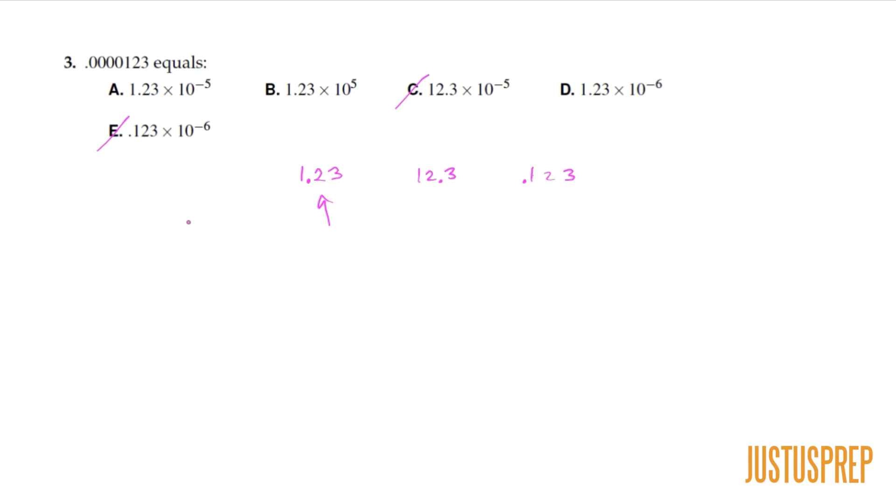When we're writing a number greater than 1 in scientific notation, we're going to raise that to a positive number. But when we're working with decimals, they're raised to a negative number, which means it's not this one. So the answer here is between 1.23 times 10 to the negative 5 and 1.23 times 10 to the negative 6.